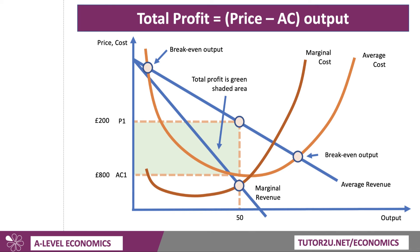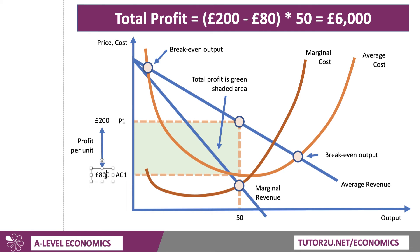Just putting some numbers on here. Let's assume the price you're charging is £200, but the cost per unit is £80, producing an output of 50 units. Therefore, the profit per unit is going to be £200 minus £80 times 50 units. So you're making £120 profit per unit, multiplied by 50 units sold, giving a total profit of £6,000. That's the highest profit you can make with those revenue and cost curves.